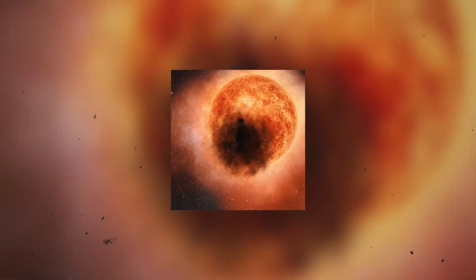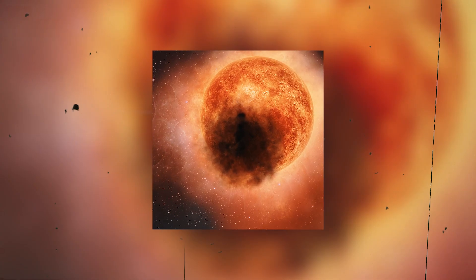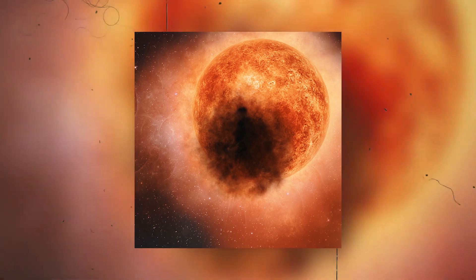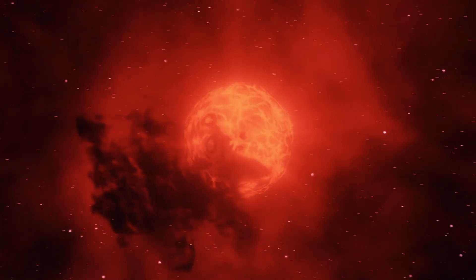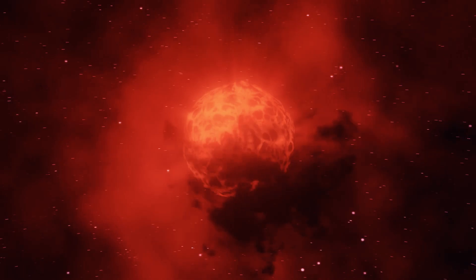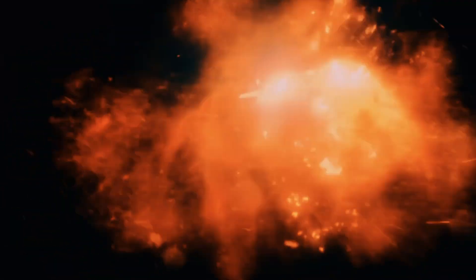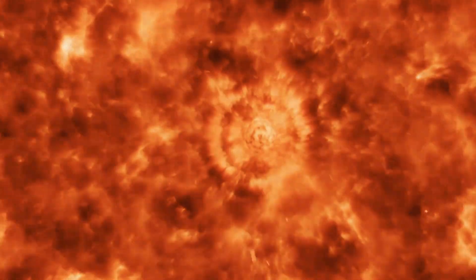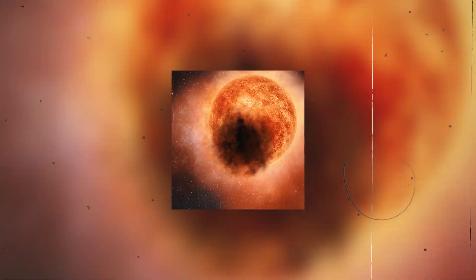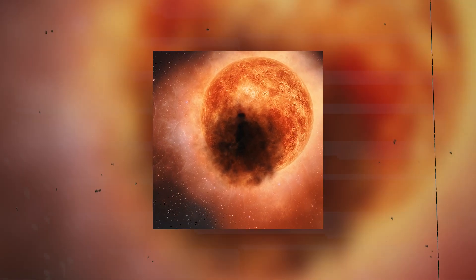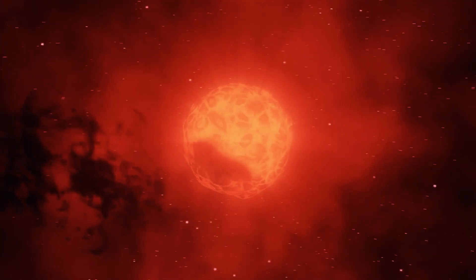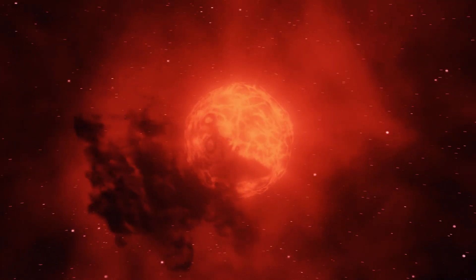Betelgeuse mysteriously darkened in late 2019. It was possibly caused by a convective plume, more than a million miles across, bubbling up from deep inside the star. It produced shocks and pulsations that blasted off the chunk of the photosphere, leaving the star with a large cool surface area under the dust cloud that was produced by the cooling piece of photosphere.